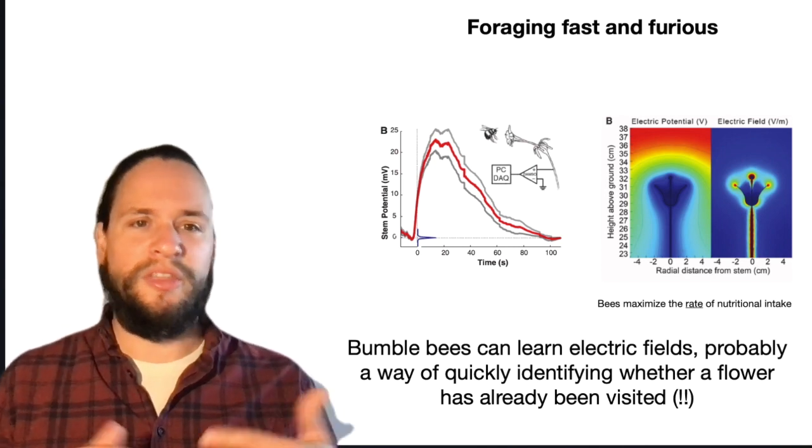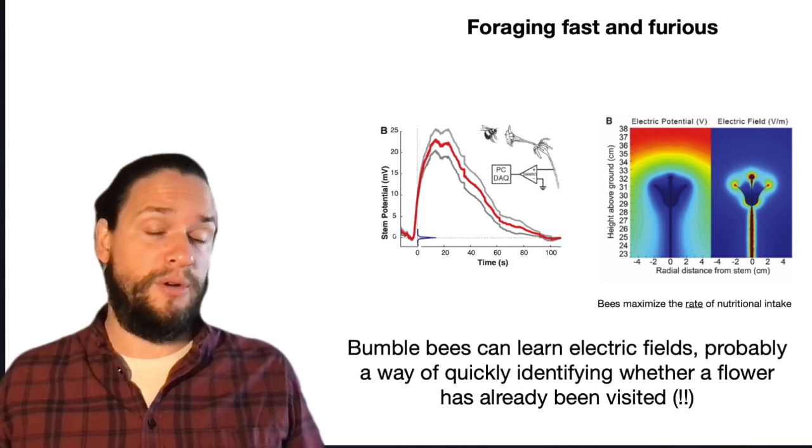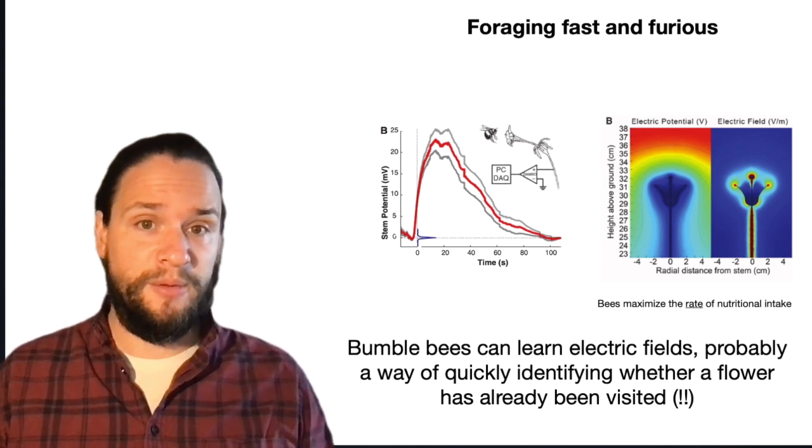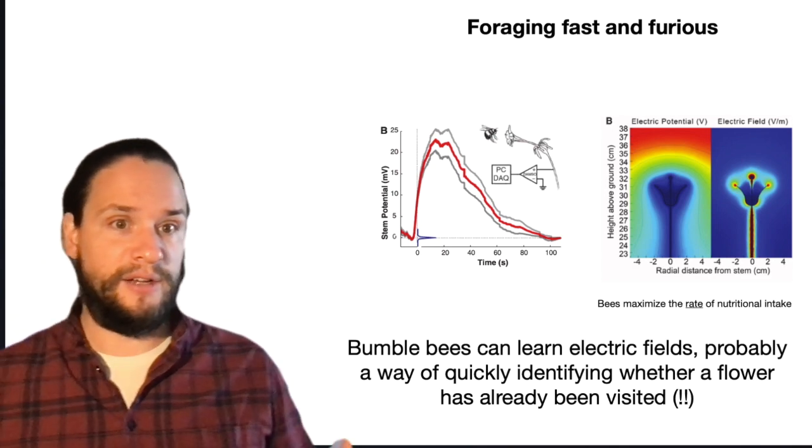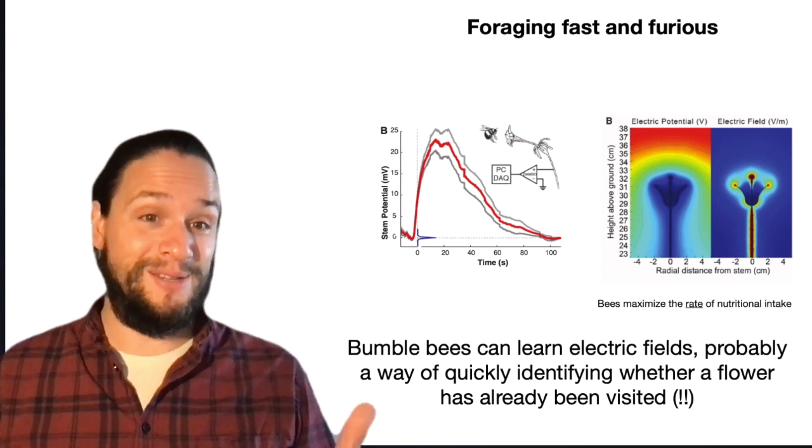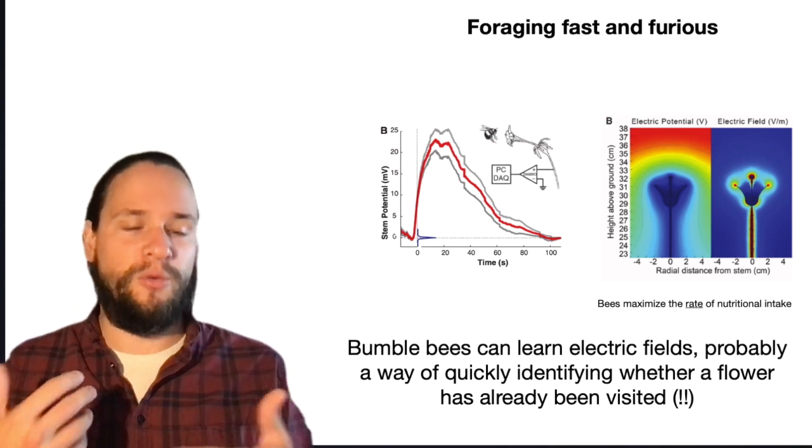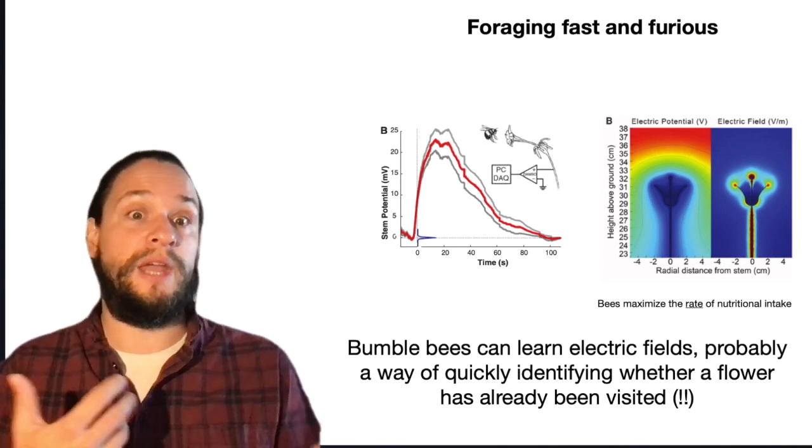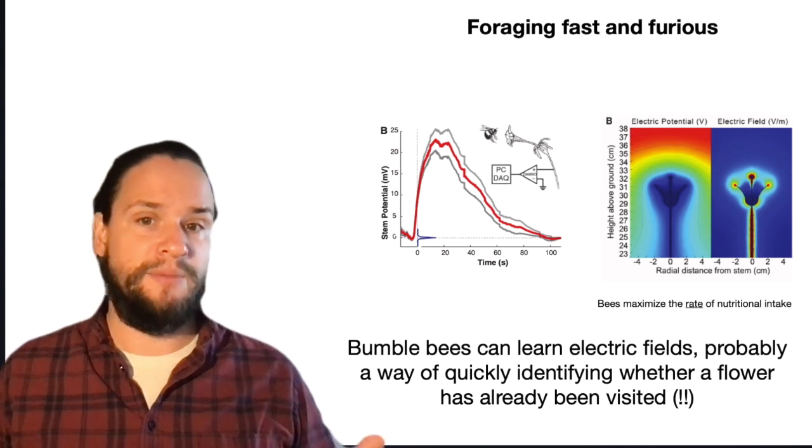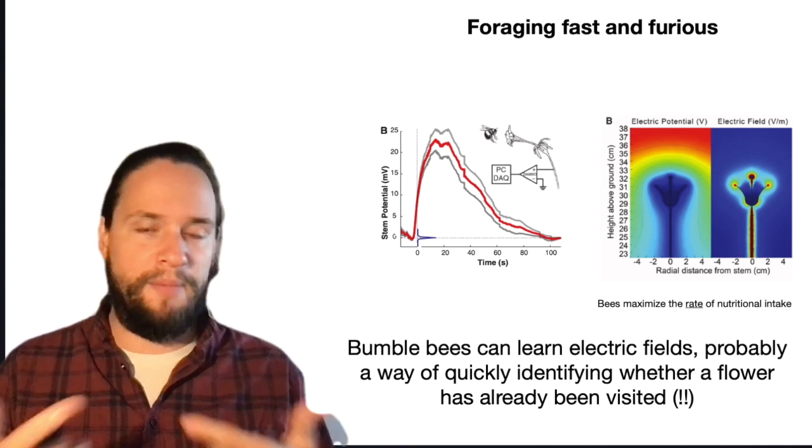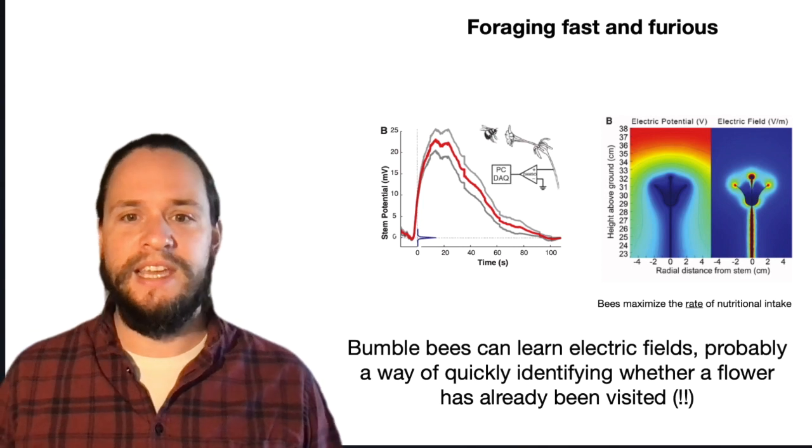So the theory on why we think this is useful for bumblebees in their natural environments is whether or not a flower has an electric charge might tell you whether or not a bee just visited that flower. So it's a great fast piece of information that without having to land on a flower can tell you whether or not something might have been visited. So in this sort of rapid decision making world, it's a key piece of information.